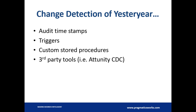Another way to detect changes was through the use of triggers. Every time you run an update statement, you write the previous or new version of the record out to a separate audit table, then bring all those records from the audit table into your warehouse. Every time a change is made, you've already got a copy of the record inside this change table. That's kind of what CDC does — but it automates that and does it more efficiently.